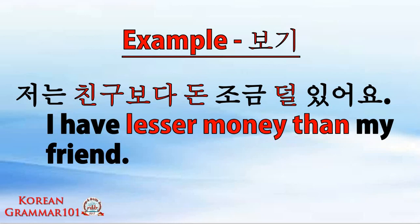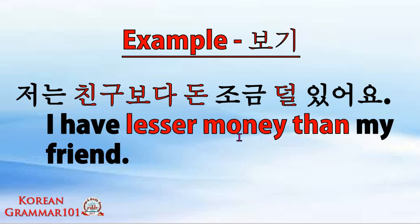And for our last example: chalun chinggu buddha don chakum dol isoyo. 'Chalun' is I, 'chinggu buddha' is than my friend, 'don' is money. This time we use 'chakum' meaning less rather than 'mani' meaning many, plus 'dol' and 'isoyo'. The sentence means: I have lesser money than my friend.